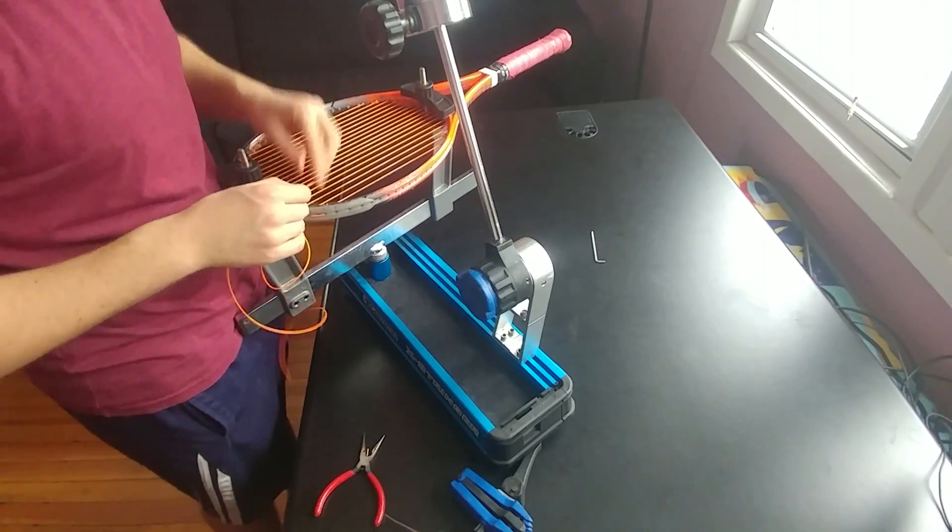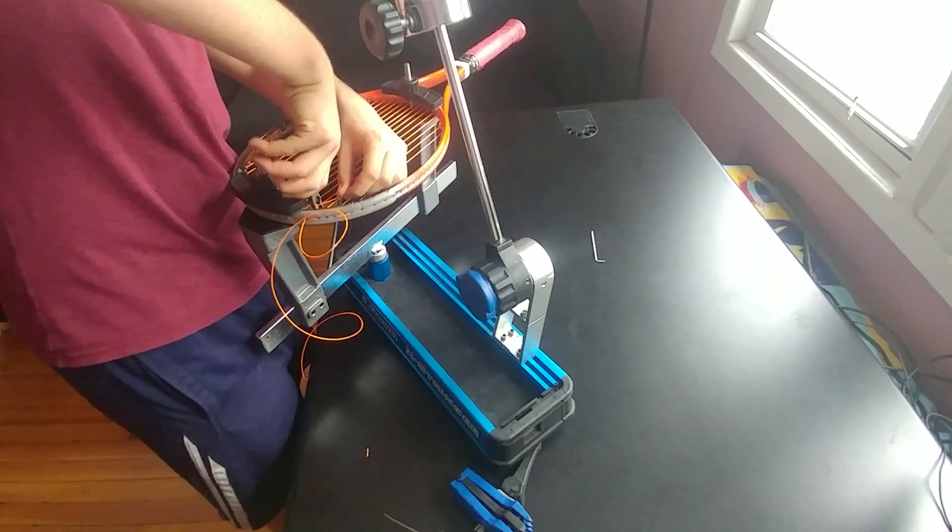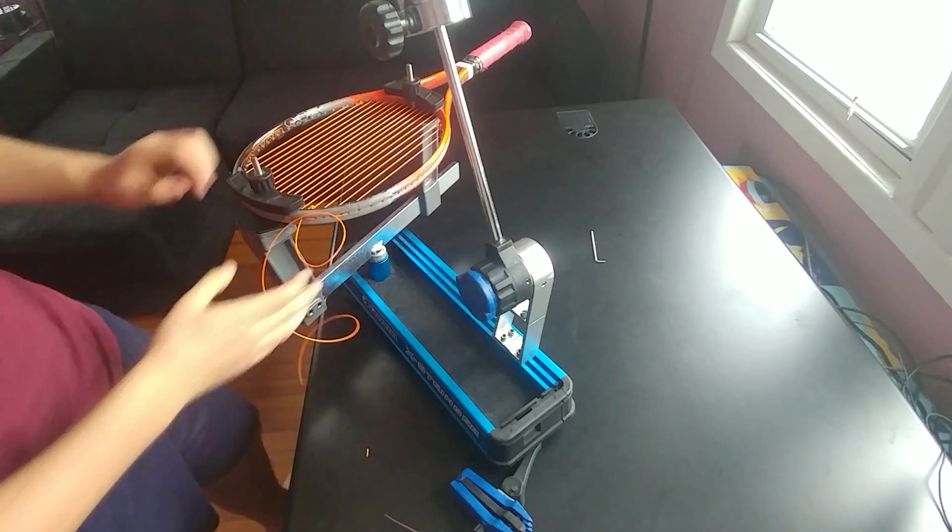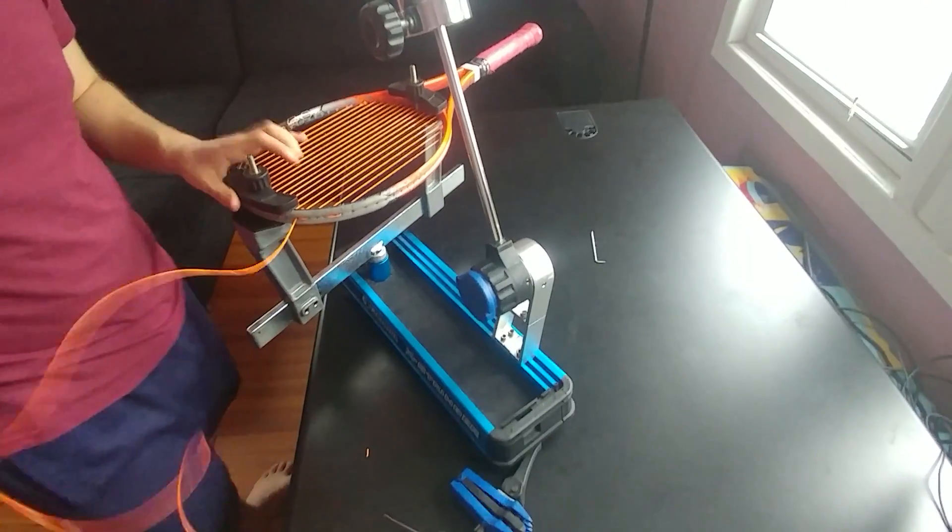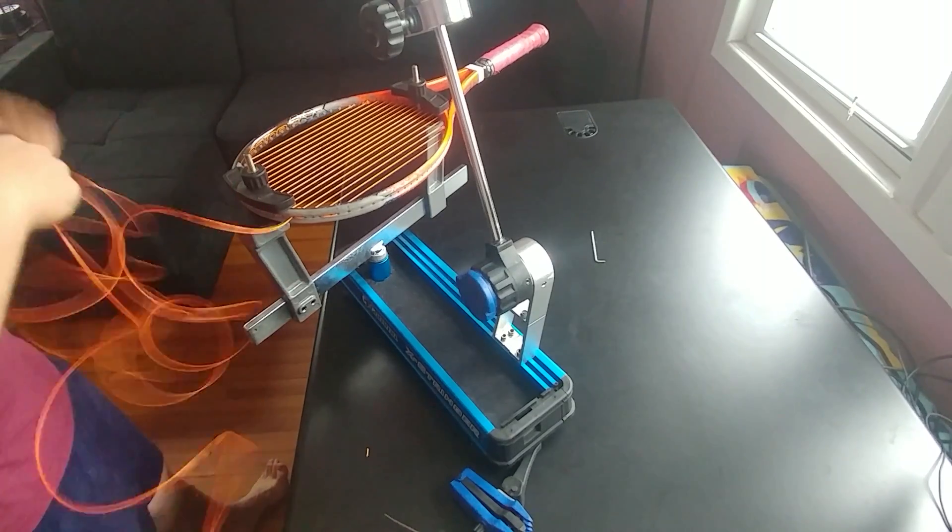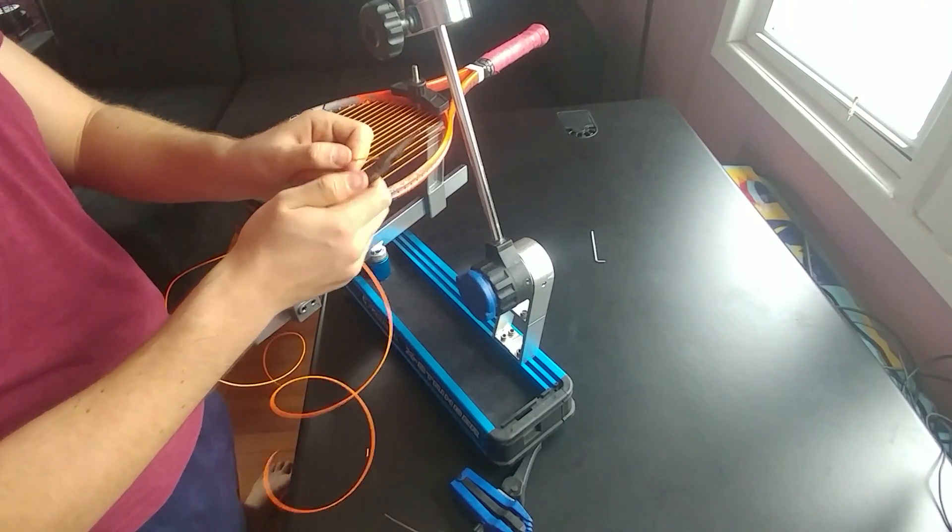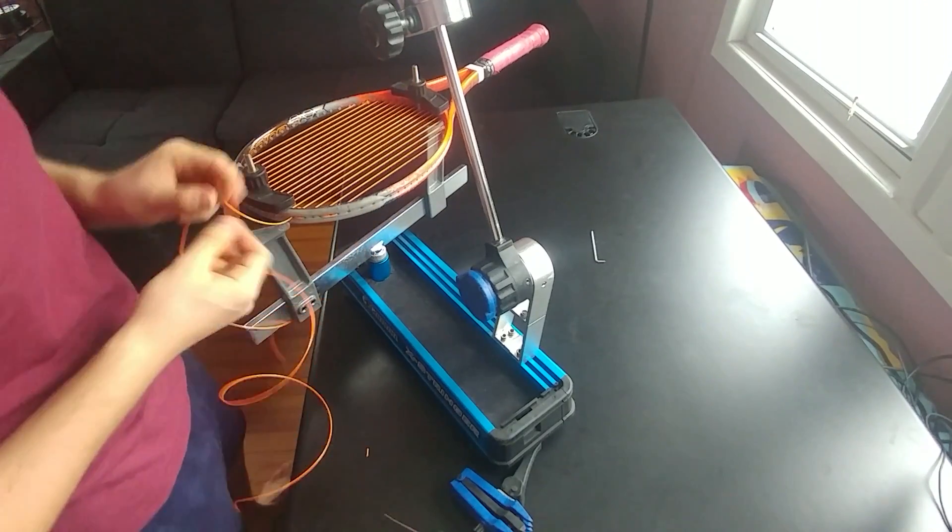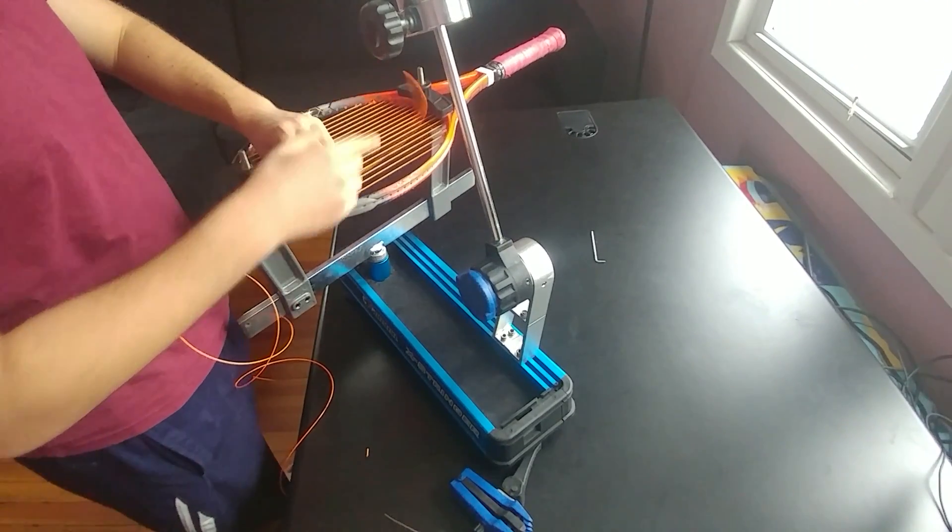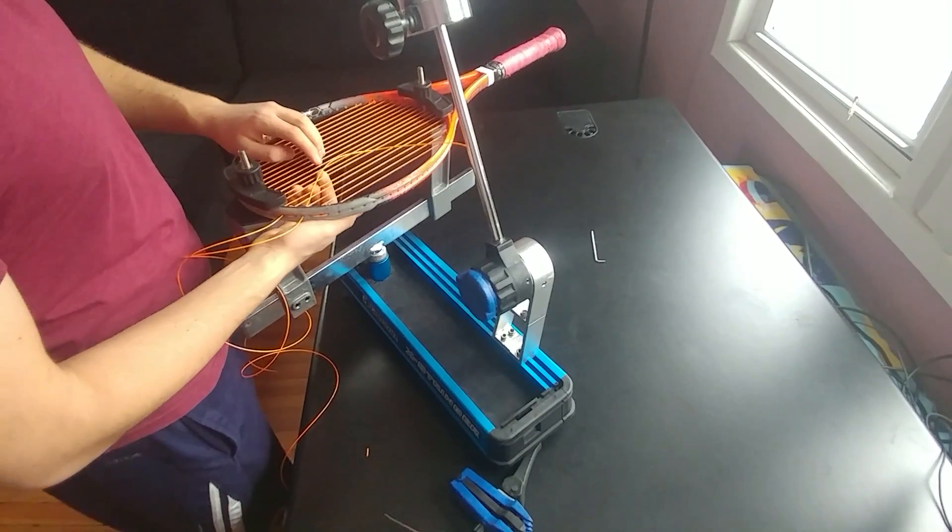So now you do the same thing for your crosses but here's how you do it. Again make the edge sharp and find the first hole and you want to start from the top and you'll go under, over, under, over. So under, over, under, over.